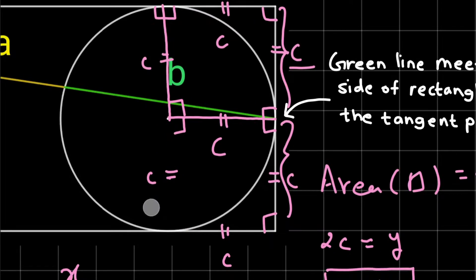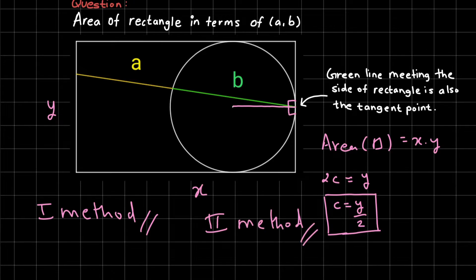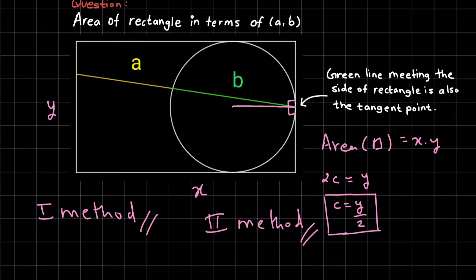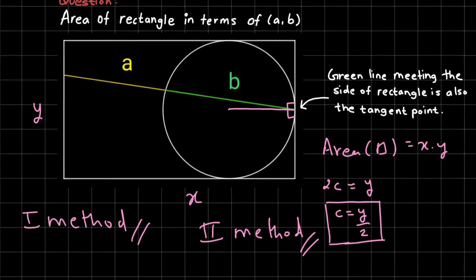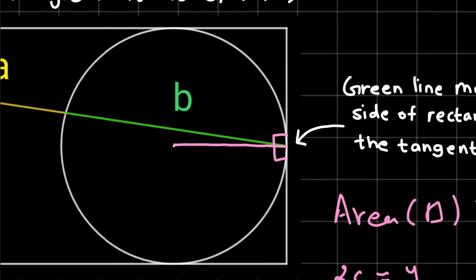There are two solutions to this problem. I'll present both, starting with the method I used first. I keep only the one radius that meets the right side of the rectangle at 90 degrees at the tangent point — that point is also one end of the green line segment.